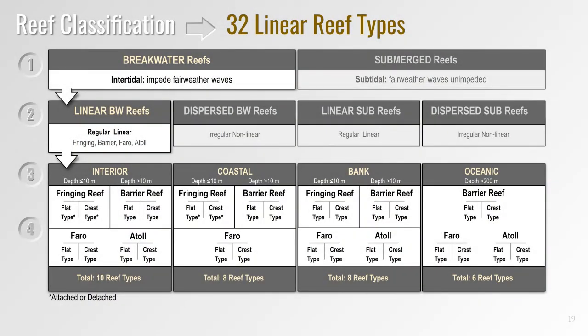Counting the number of reef categories produced by these four steps gives a maximum total of 32 linear breakwater reef types — 10 types of interior reef, 8 types of coastal reef, 8 types of bank reef, and 6 types of oceanic reef. These numbers are still preliminary as they're only for linear breakwater reefs; the number will increase when we include dispersed and submerged reef classes. For now this scheme can be applied to breakwater reefs in any ocean anywhere in the world.